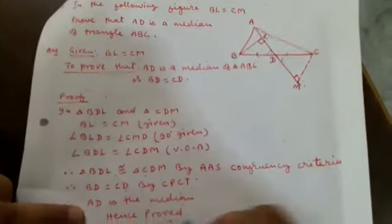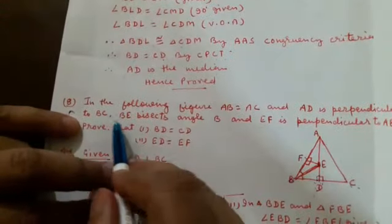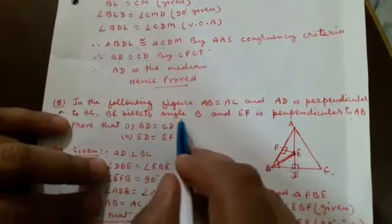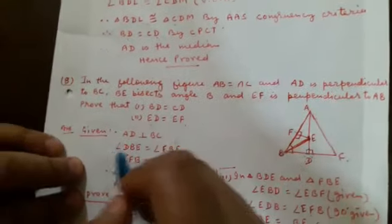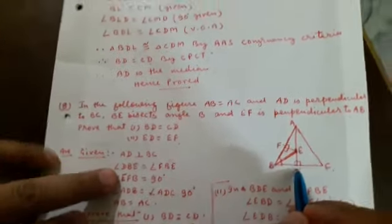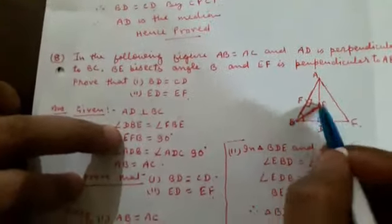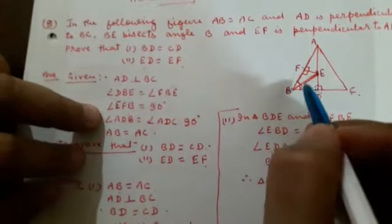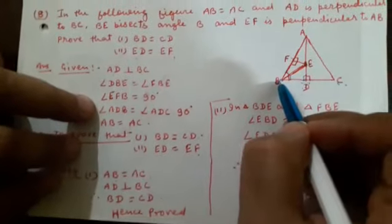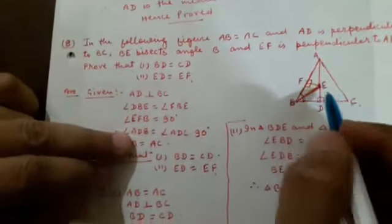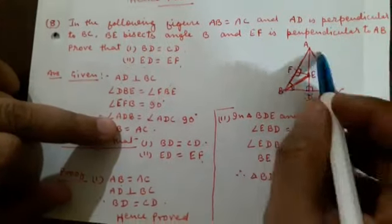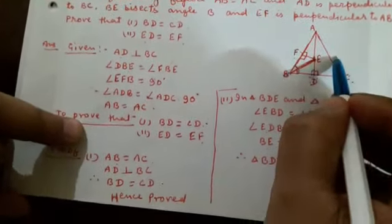So AD is the median. Hence proved. Next question: In the following figure, AB is equal to AC and AD is perpendicular to BC. BE bisects angle B and EF is perpendicular to AB. Prove that BD is equal to CD and ED is equal to EF. Given: AD is perpendicular to BC, angle DBE is equal to angle FBE, angle EFB is equal to 90 degrees, angle ADB equals angle ADC equals 90 degrees, and AB is equal to AC.